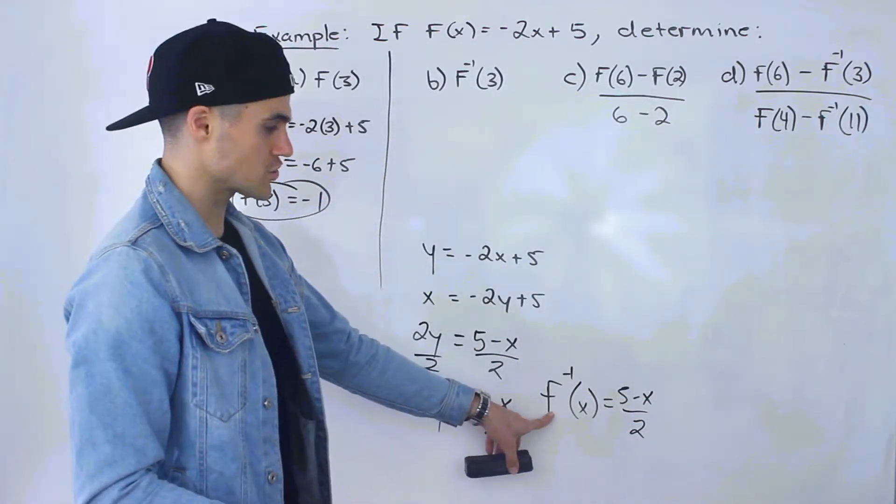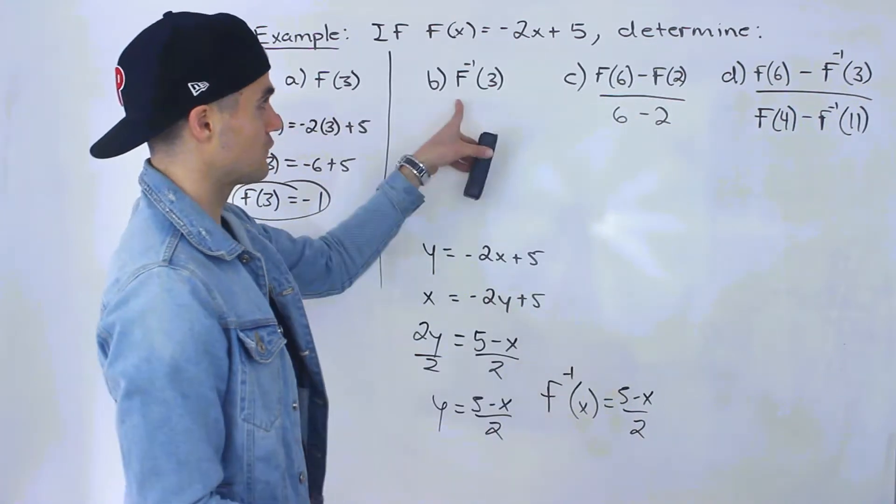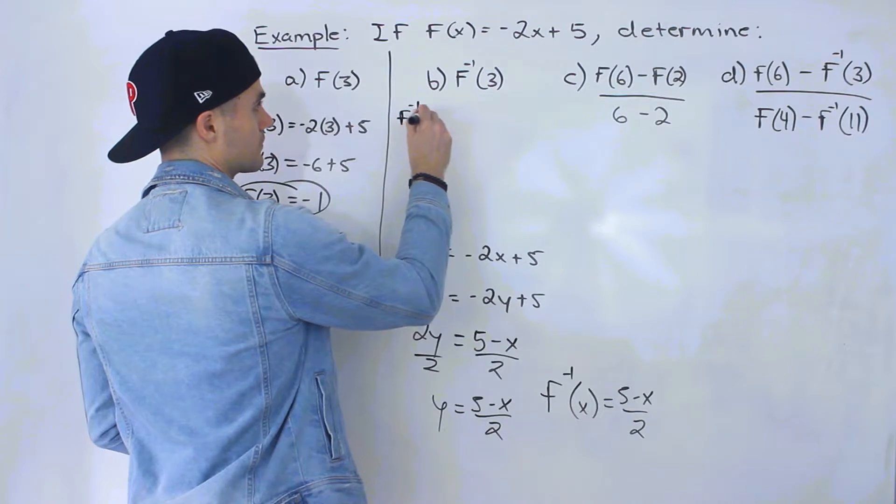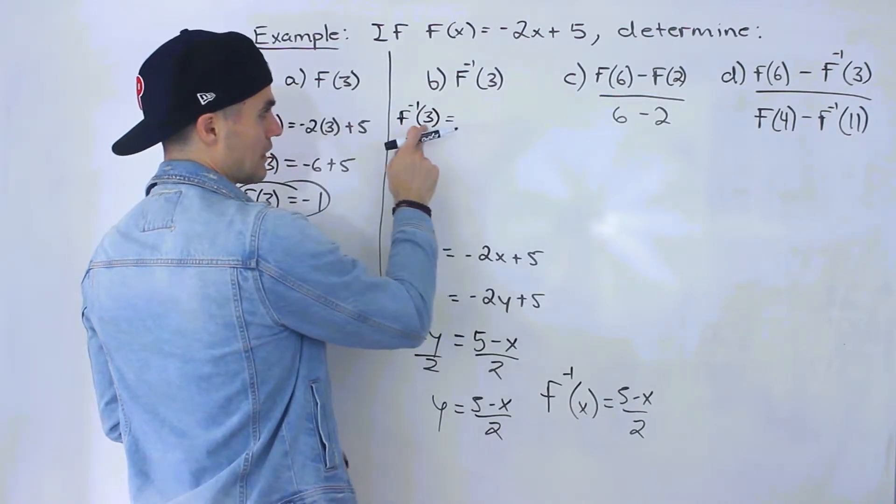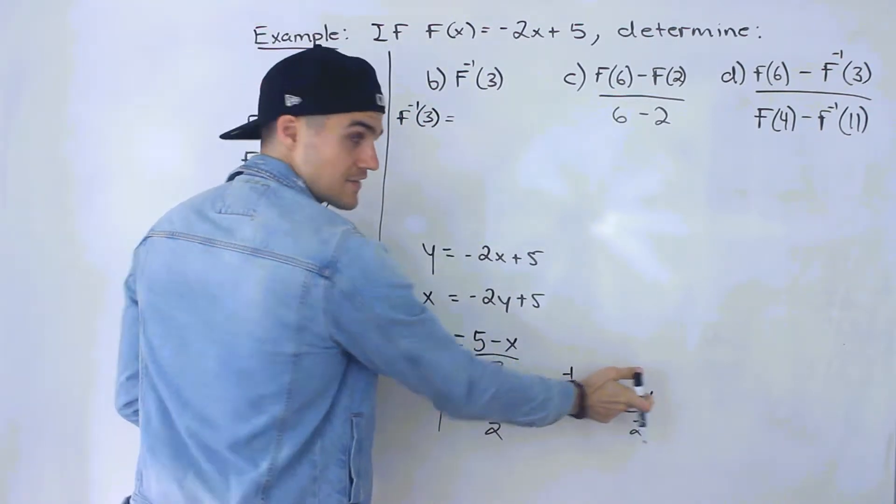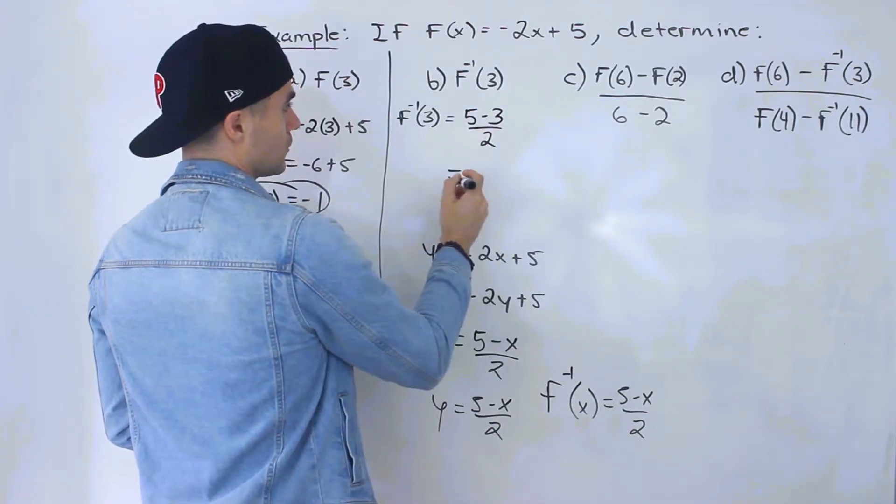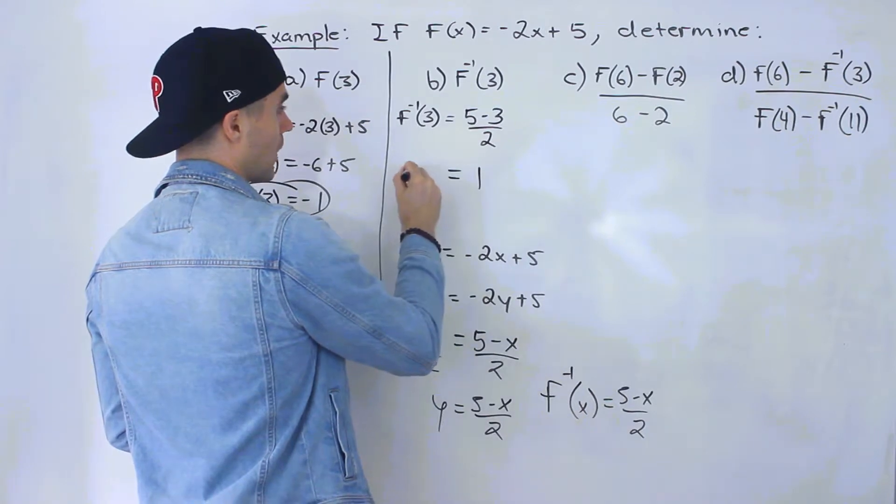So now that we have this expression for the inverse, we could figure out what this is. This would basically be we would plug in 3 into this x value. So we'd have (5 - 3)/2, which would give us 2/2, which would give us 1.